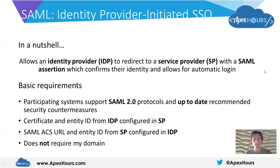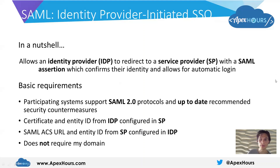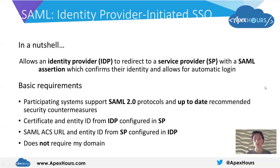At a high level, prerequisites that we need: all the systems involved need to offer SAML, ideally the latest specification version, and we'd want to ensure that all of the recommended security measures are in place. We also need the certificate and the entity ID from the identity provider to be set up in the service provider so this allows the service provider to verify that the SAML assertions are correct and provided by the correct identity provider, and it allows it to correlate the assertion with the identifier of that identity provider.